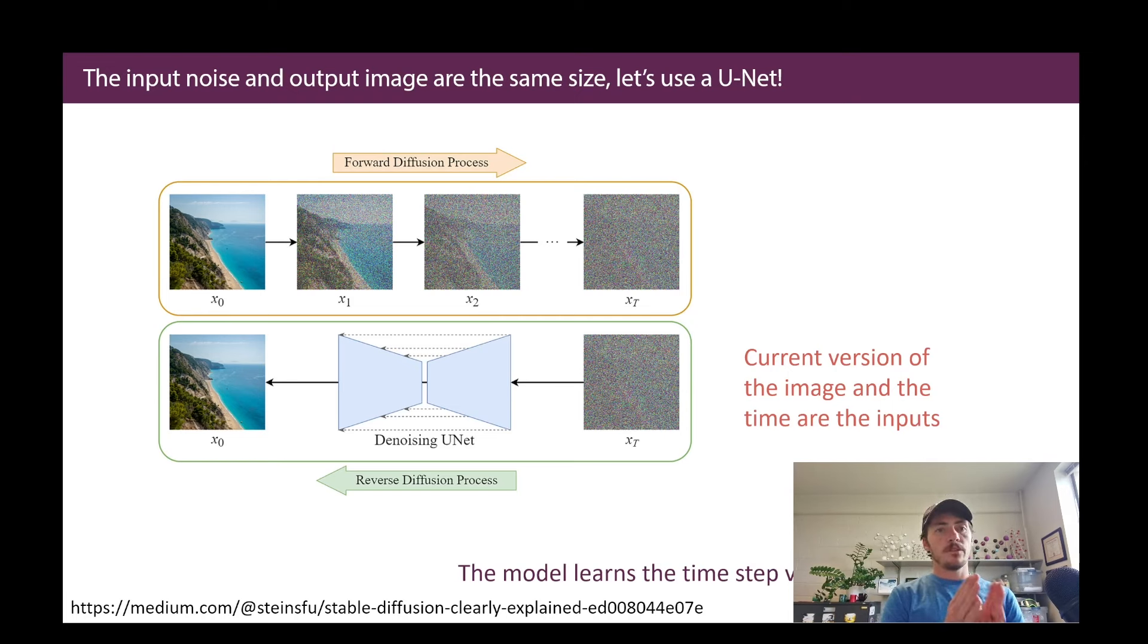Okay, so in other words, the input, if it's a picture of something and that needs to go to an output, which is noise, and that needs to be the same size. Well, if you saw our previous video on image segmentation where we talked about U-Nets, same size coming in, same size coming out, U-Nets are going to be a natural choice for that. So, we're going to use the U-Net as a denoising unit. So, what goes into this U-Net? Well, the current version of the image, we're going to do this step-by-step, and the timestamp.